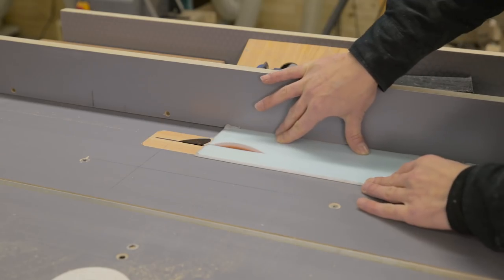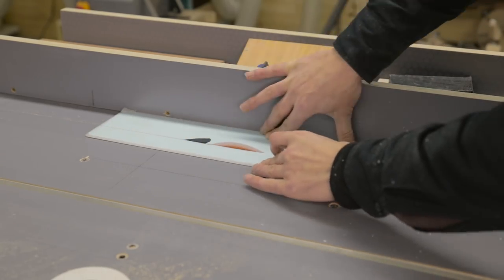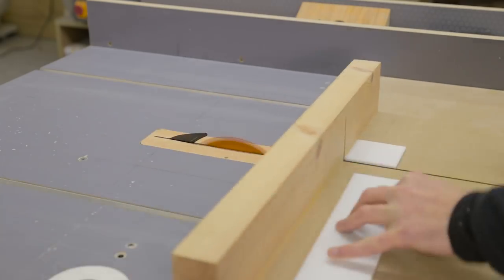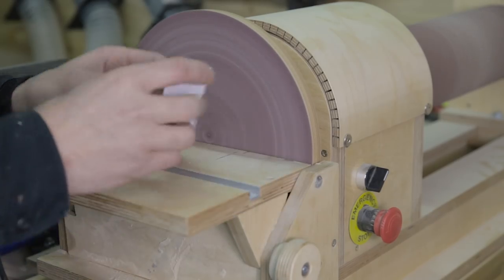I'm also going to machine the zero clearance. I'll use this piece of opaline methacrylate. I cut it to size and place it using the saw blade itself.